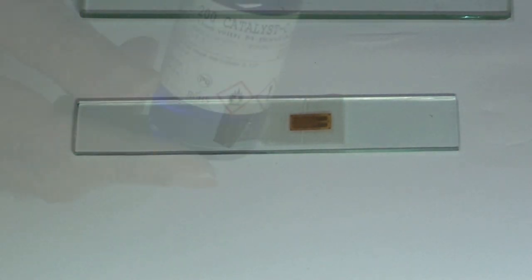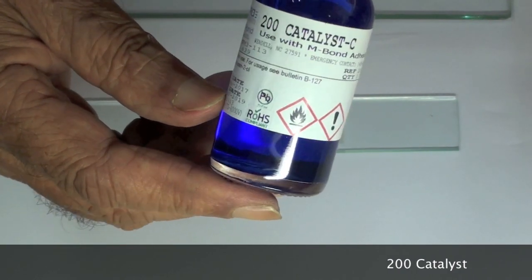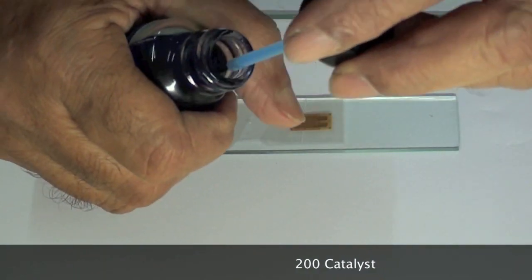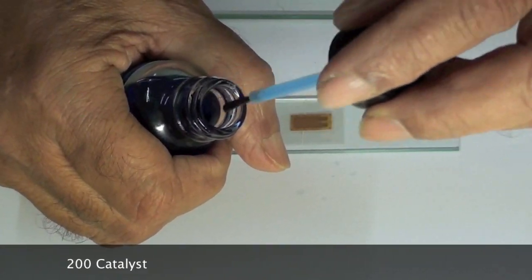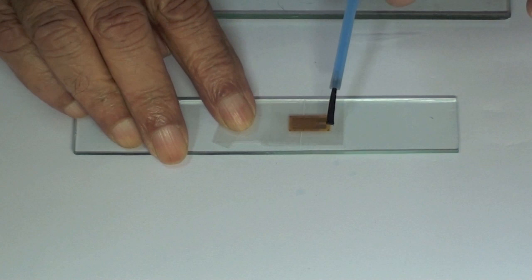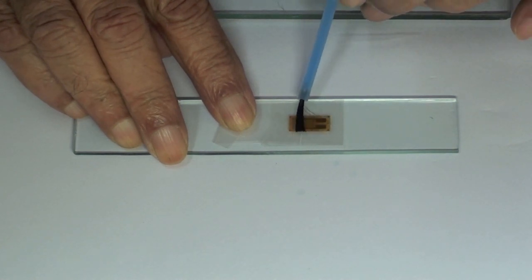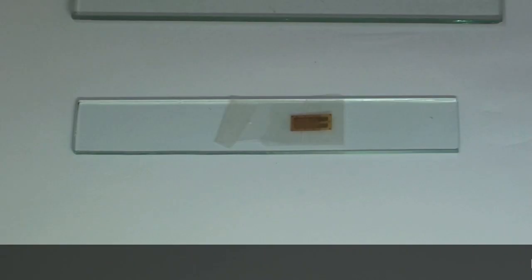Next, a very small amount of M-Bond 200 catalyst is applied to the bottom of the gauge. The brush is swiped against the bottle top several times to remove almost all of the catalyst. Then the bottom of the gauge is brushed just once. All the solvent in the catalyst should evaporate, which normally takes about a minute.